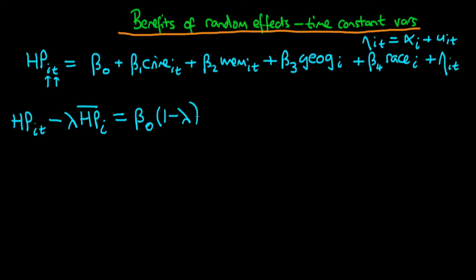So I get beta 0 times (1 minus lambda), plus now we get beta 1 times the crime rate in city i at time t minus the time average level of crime rate, and then I get plus beta 2 times the unemployment rate in city i at time t minus the unemployment rate which has been averaged across time. So there's no change there up until now from what we did before.